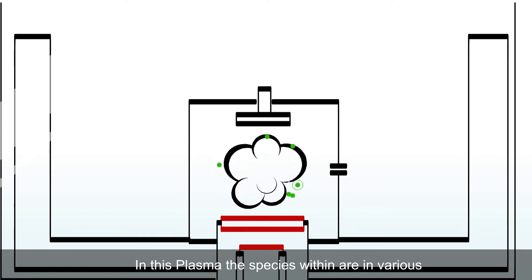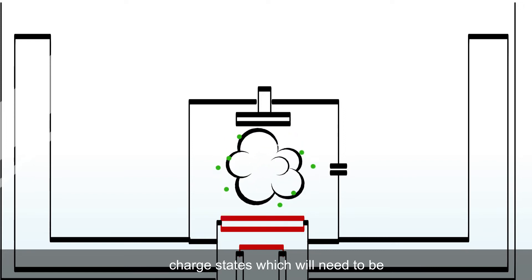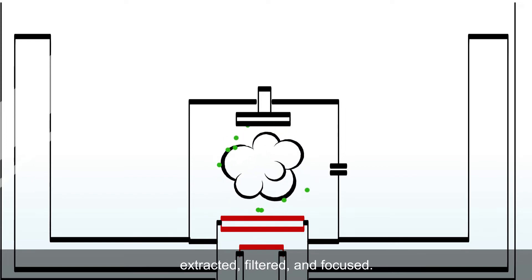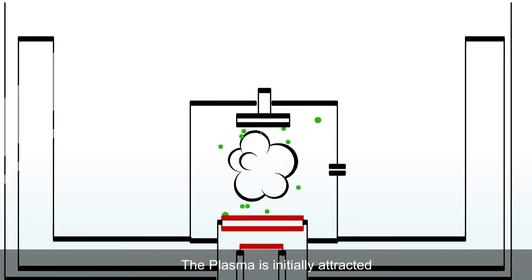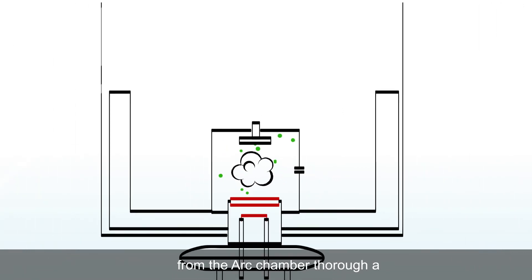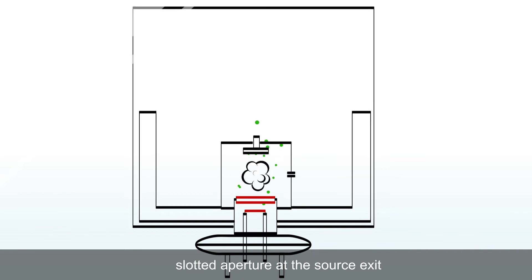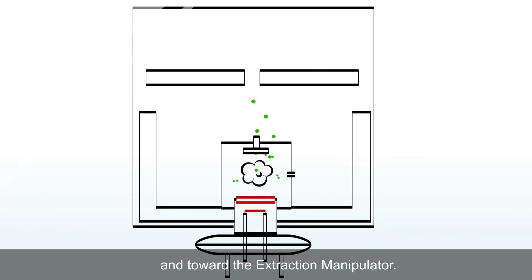In this plasma, the species within are in various charge states which will need to be extracted, filtered, and focused. The plasma is initially attracted from the arc chamber through a slotted aperture at the source exit and toward the extraction manipulator.